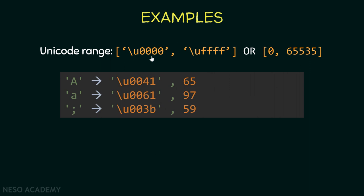Now let's see some examples. The capital letter A inside single quotes is a character. In Java we can write a capital A inside single quotes, or we can write the Unicode character '\u0041' inside single quotes — both represent capital A. The integer 65 also represents capital A. So we can use the character itself, the Unicode representation, or an integer. Another example: lowercase a has the Unicode '\u0061' and is the integer 97.